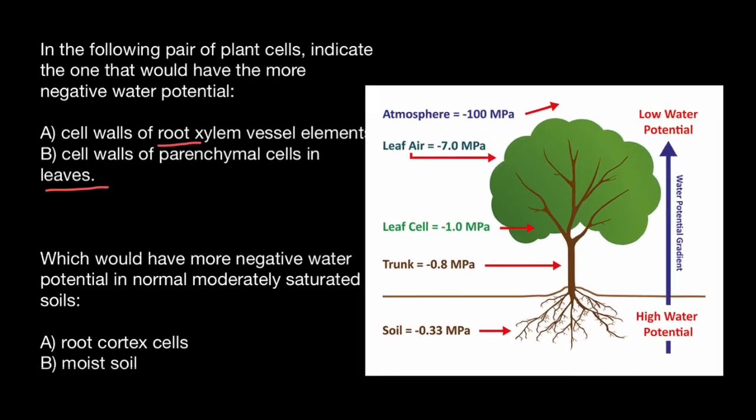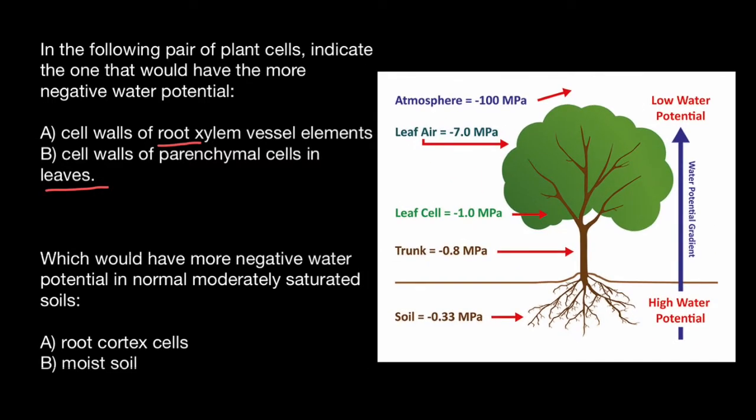Now I want you to take a look at this picture. So what do you see here? Here's a tree, and water first comes to the root system, then to the trunk or stem of this plant, and then to the branches, to the leaves, and would be evaporated from the leaf surfaces.